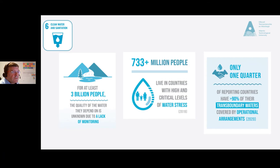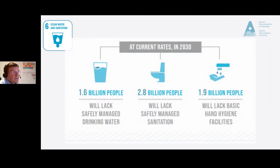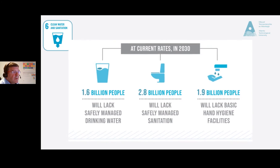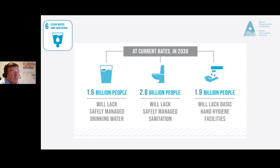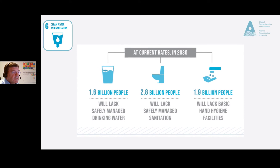Over 733 million people live in countries with high and critical levels of water stress. Only a quarter of reporting countries have greater than 90% of their transboundary waters covered by operational arrangements. At current rates, by 2030, 1.6 billion people will lack safely managed drinking water, 2.8 billion will lack safely managed sanitation, and 1.9 billion will lack basic hand hygiene facilities. These are shocking statistics.